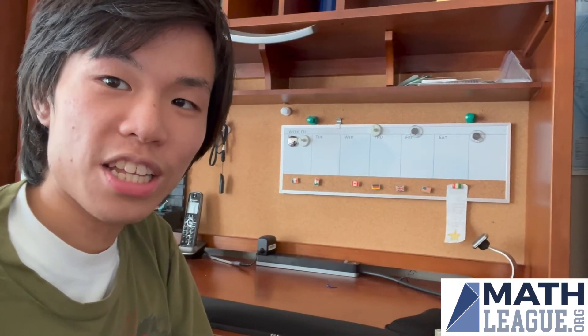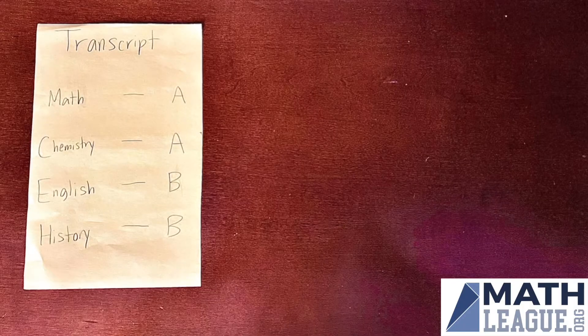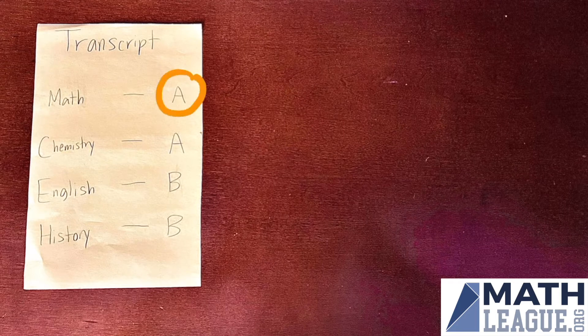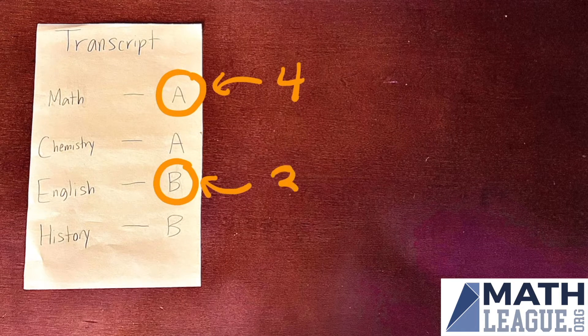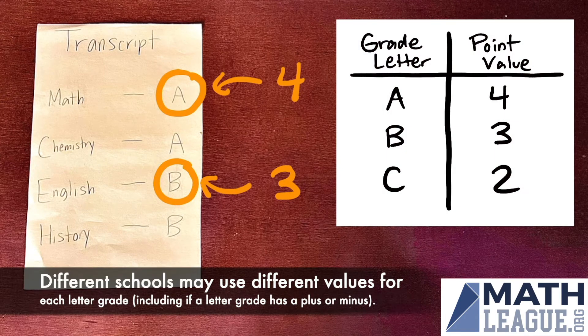So as an example, let's apply it to Ethan's grades for his semester right there. In this scenario, Ethan got two As and two Bs. An A is worth a 4.0, and a B is worth a 3.0. All that came from the given information on what each letter grade represents in Ethan's school.